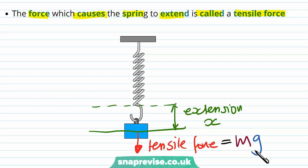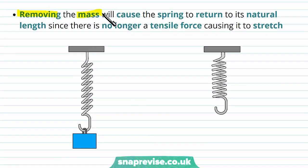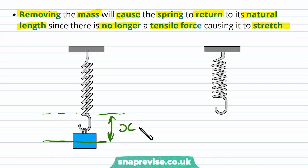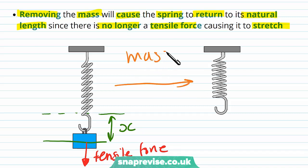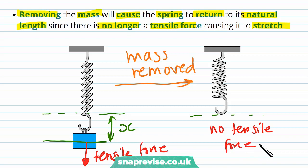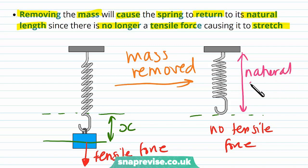Removing the mass will cause the spring to return to its natural length, since there is no longer a tensile force causing it to stretch. The tensile force was coming from the weight of the mass, so once we remove the mass there's no tensile force acting on the spring, and the spring returns to its natural length.